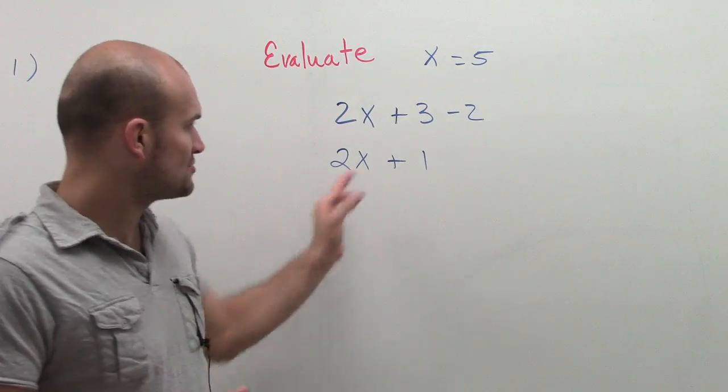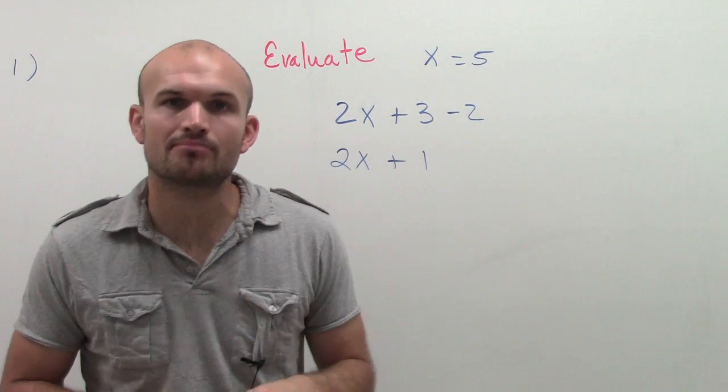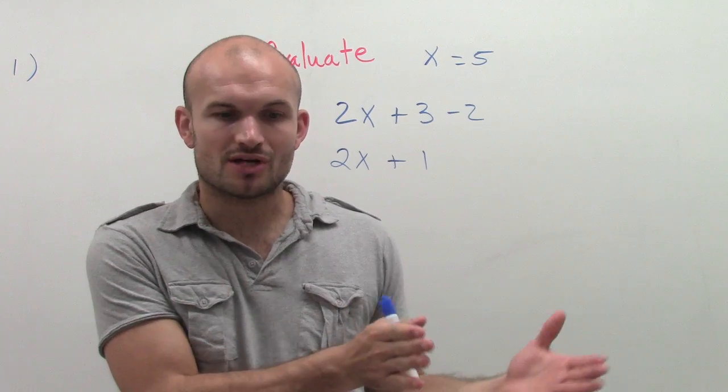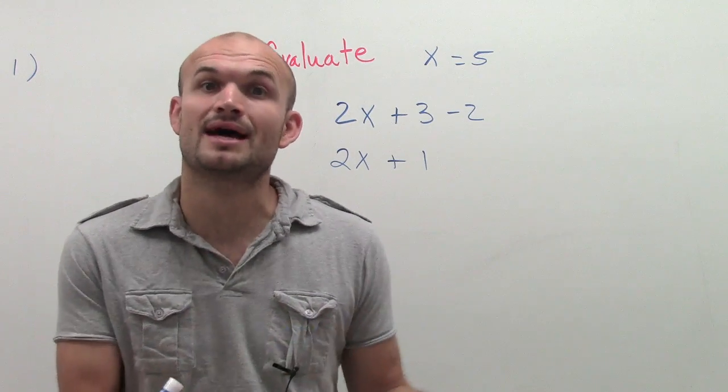Now the next thing is we have this expression, 2 times a number plus 1. We worked on translating, 2 times a number plus 1. We don't know what the value of that number is until now.